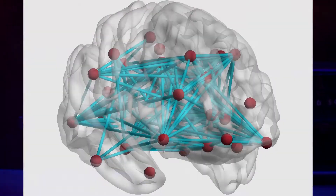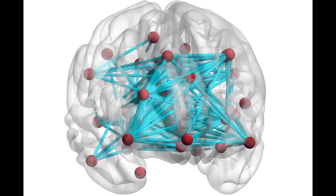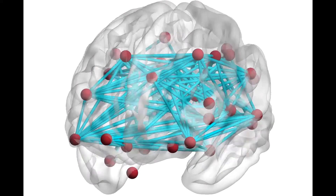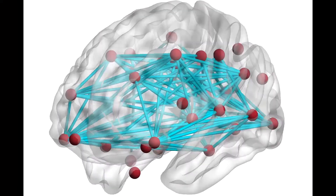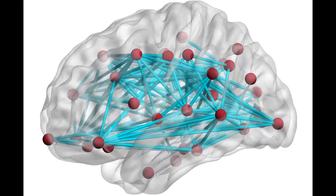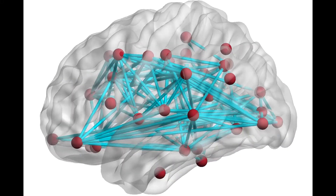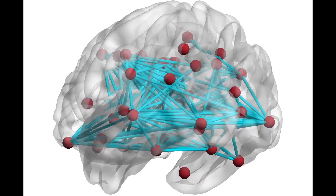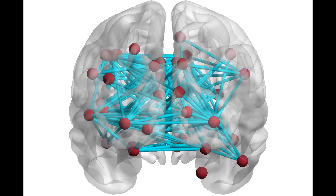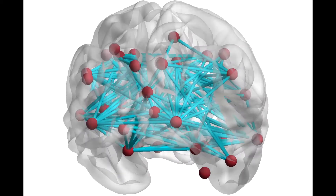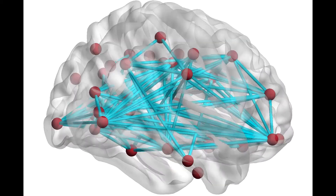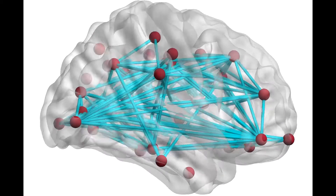You can see in this video the red dots indicate the regions that have been found to be very significantly related to creativity, and the blue lines denote the important interconnections between them that affect creativity.